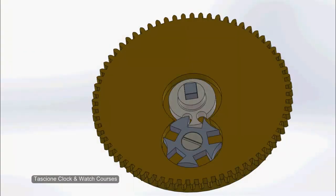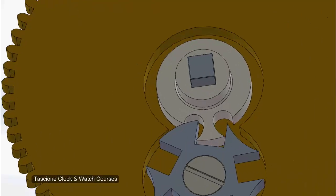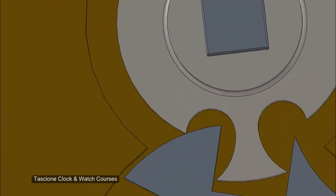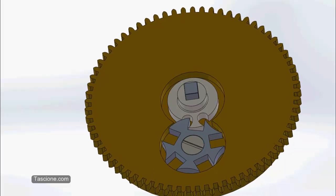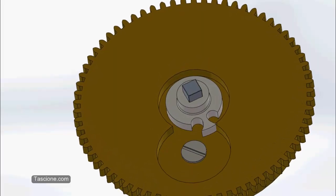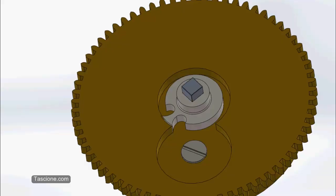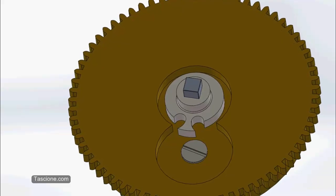Now when the barrel completed its fourth revolution and was locked from going any further by the stop work, we still had that full wind of unused power left in the barrel. When we deactivate the stop work by removing the star wheel, this last wind of torque is released.